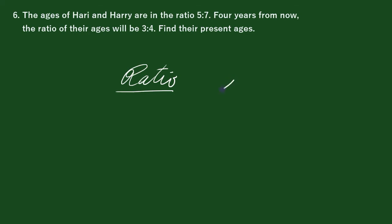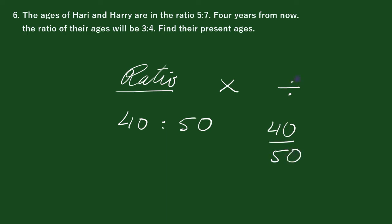Number 2 is to multiply and divide by number 2. And then 40 is to 50. The fraction is 40 by 50. Number 2 is to divide by number 2.